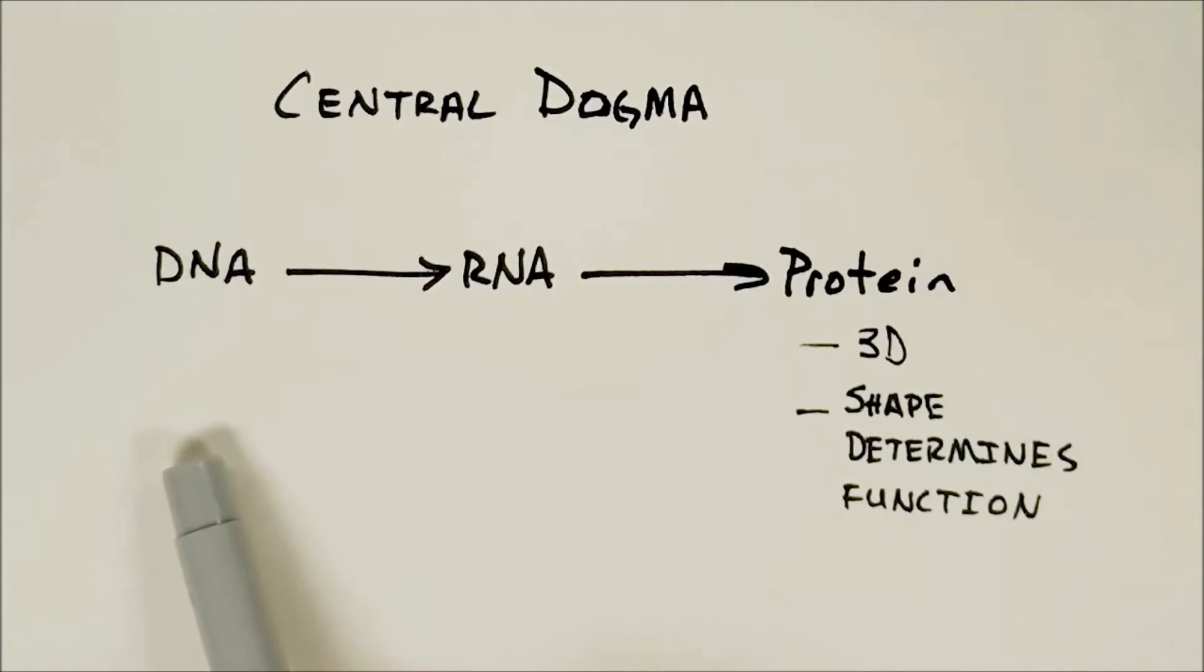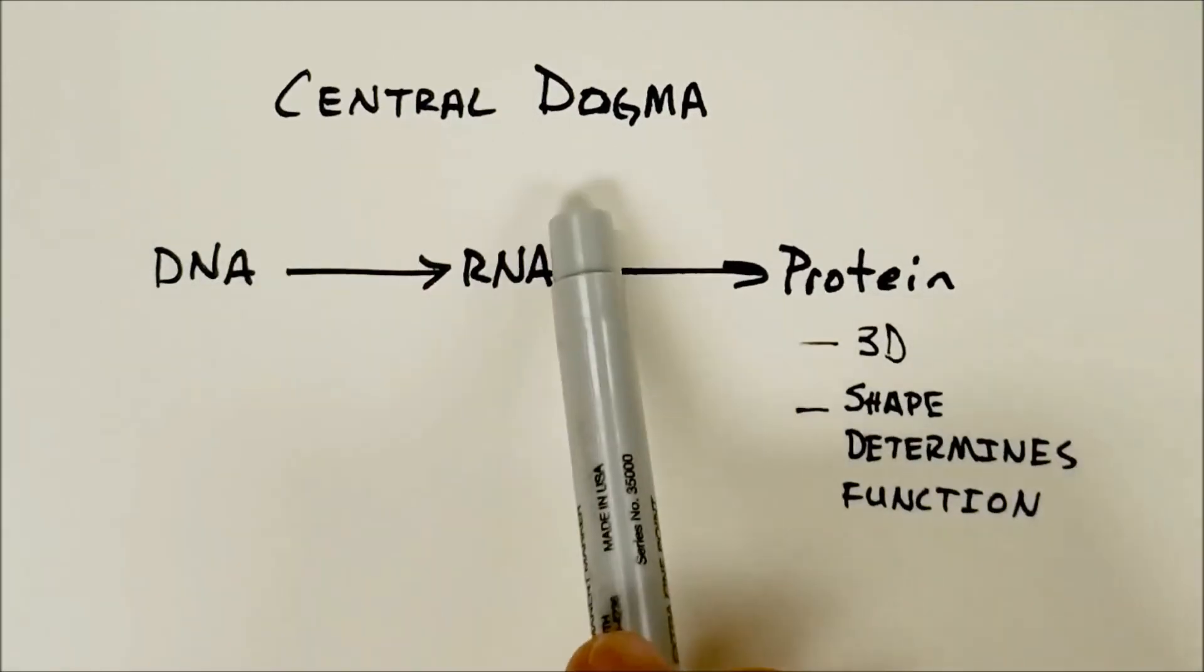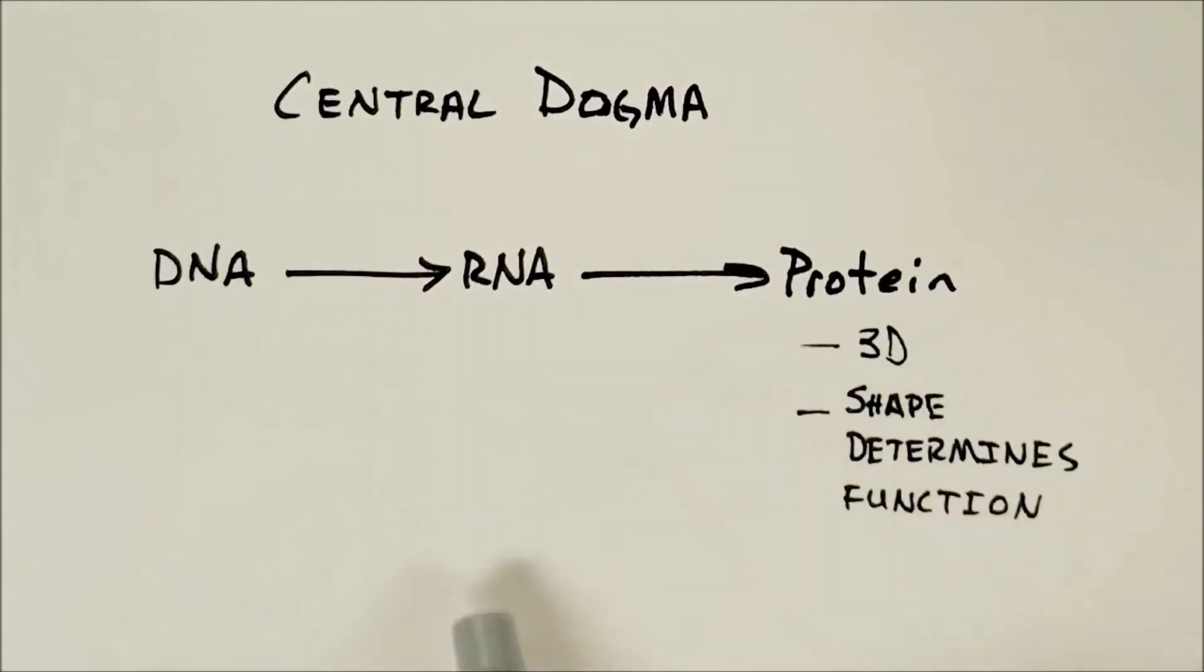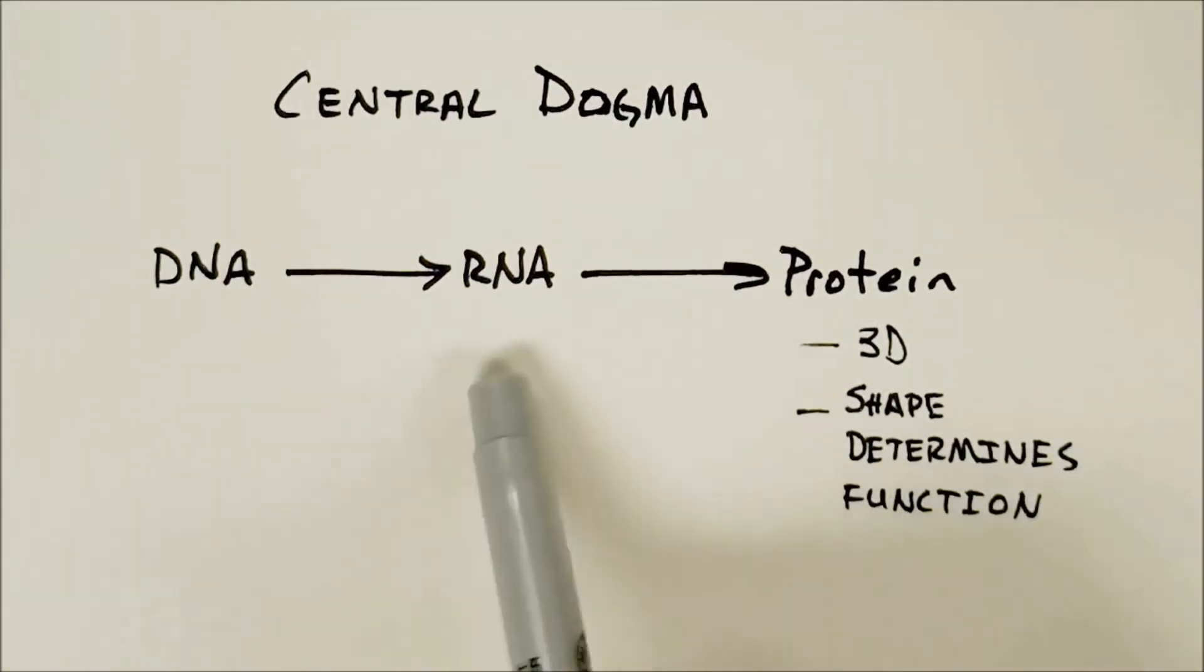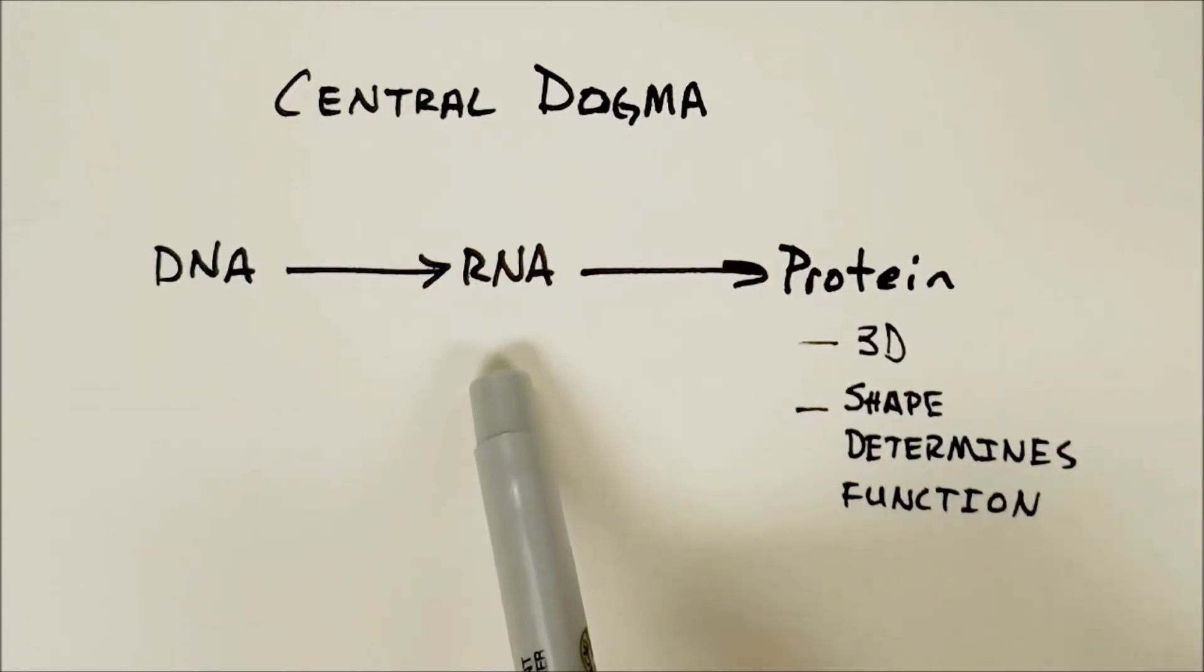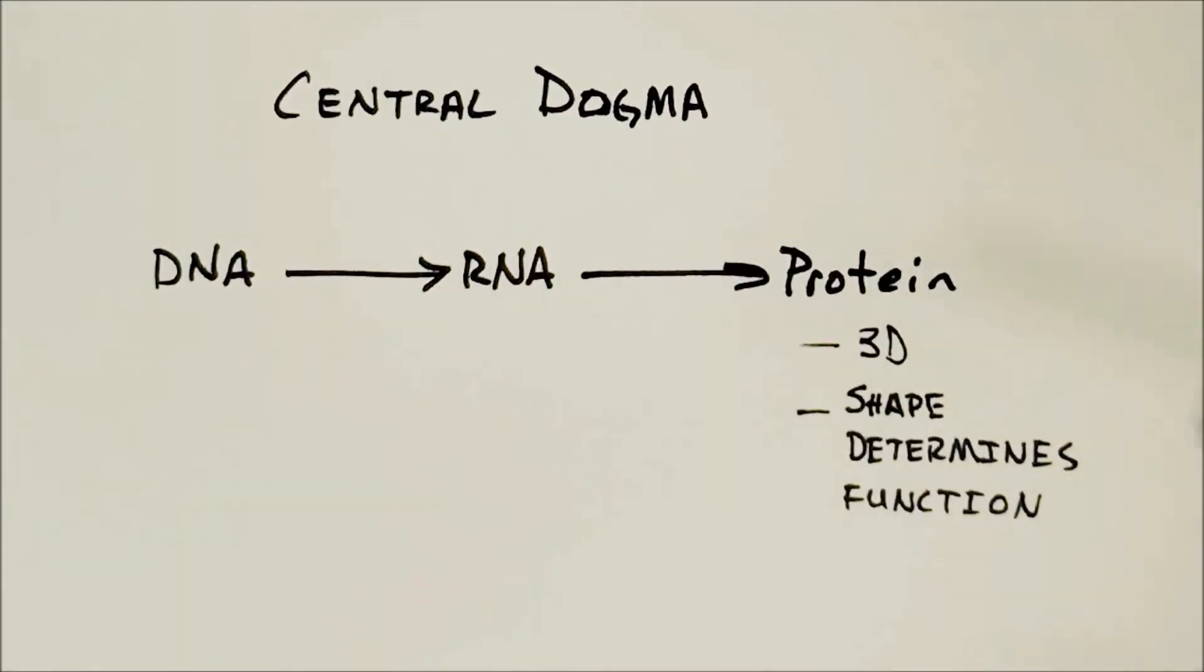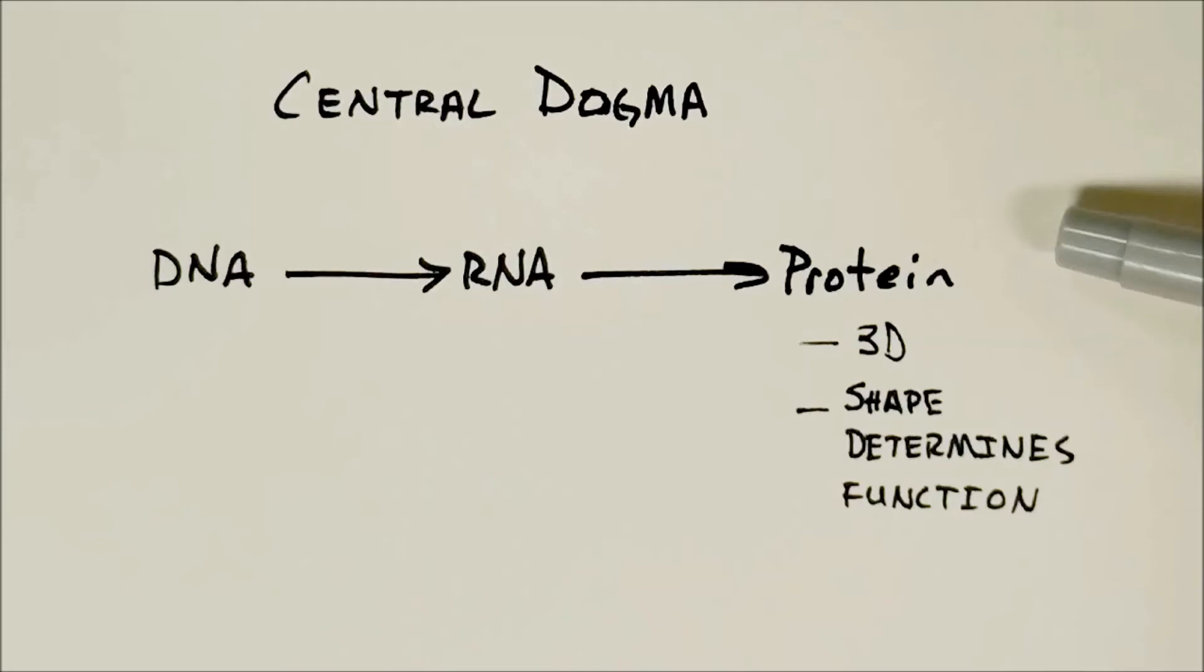Another important concept to help you understand how these viruses work is the idea of the central dogma of biology. Essentially the central dogma is the idea that DNA, or deoxyribonucleic acid, is used as a template for the production of an intermediate that we call RNA, or ribonucleic acid, and ultimately that is then utilized as a template to create proteins. What's interesting about proteins is they are three dimensional in shape and their shape will help determine their function.